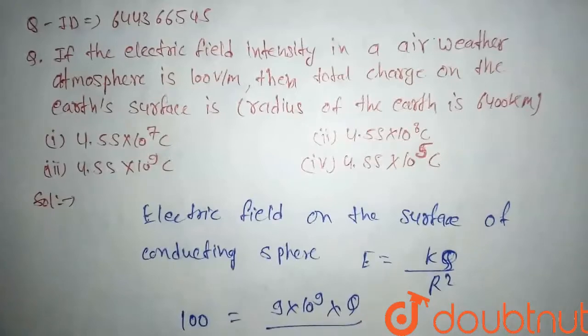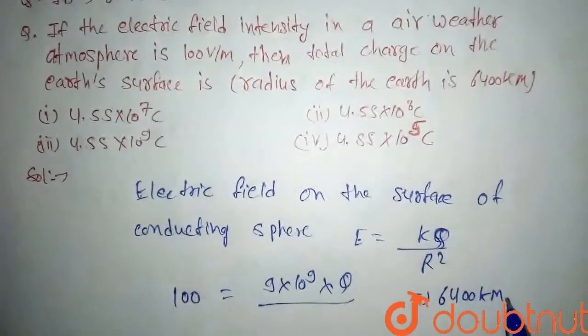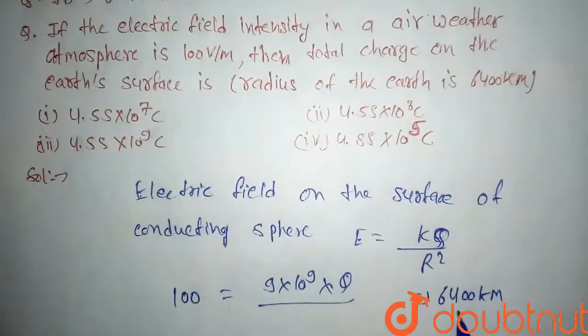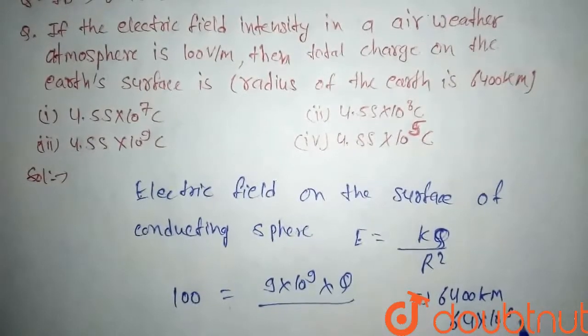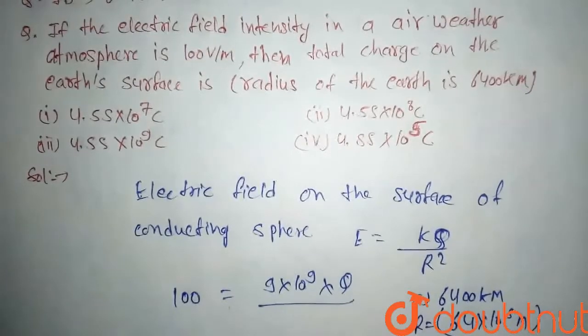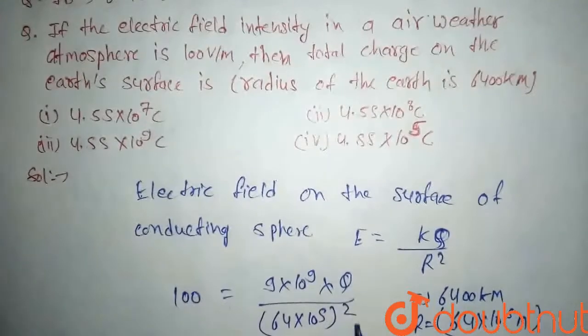So what is the radius here? Radius is given 6400 kilometer, so it can be written as 64 into 10 to power 5 meter. So this will be our radius, so here we will put 64 into 10 to power 5 square.